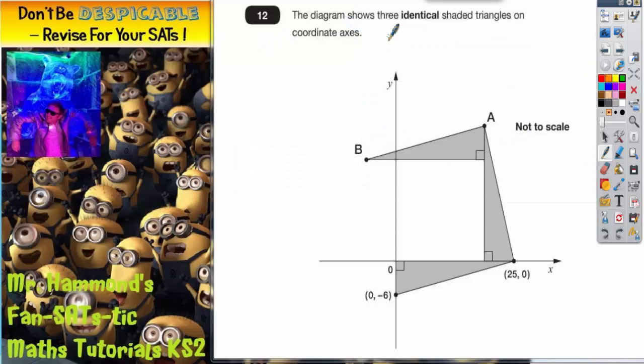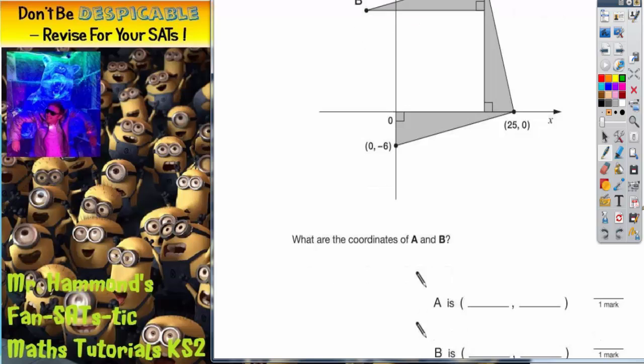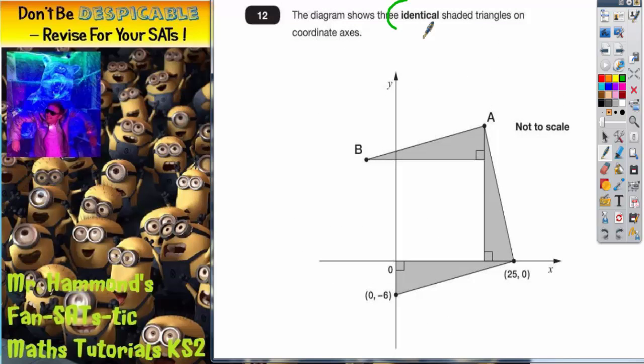Question 12. The diagram shows three identical shaded triangles on coordinate axes. So what we've got to do is find the coordinates of point A and point B. Now at this point it is worth saying that they are identical triangles, so that will help us.